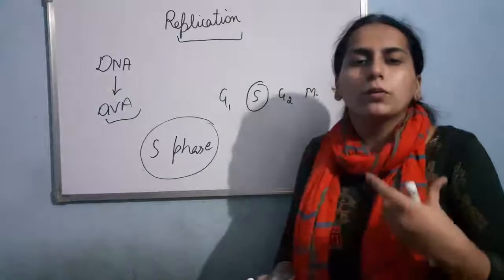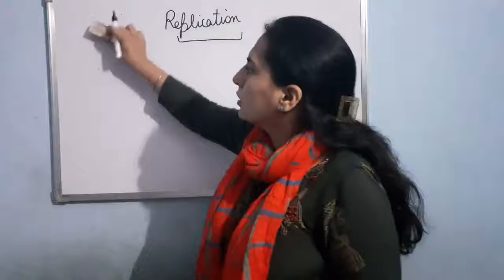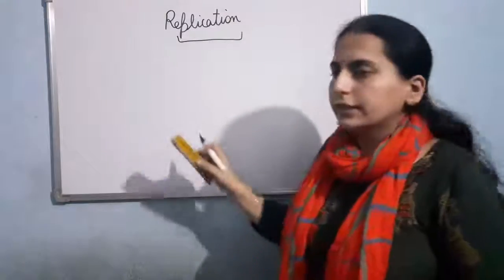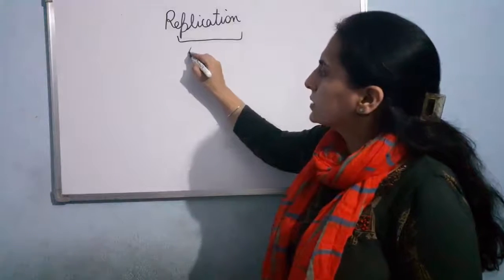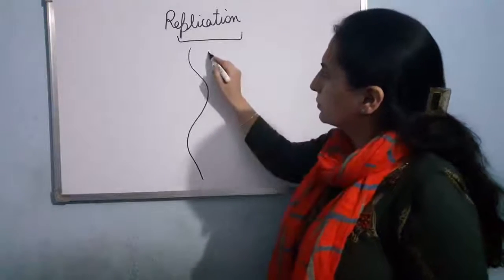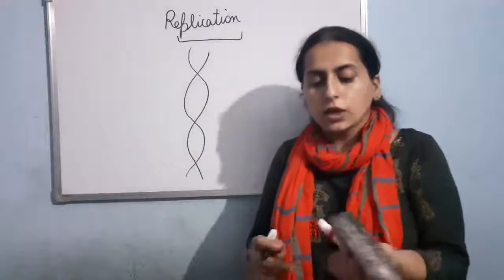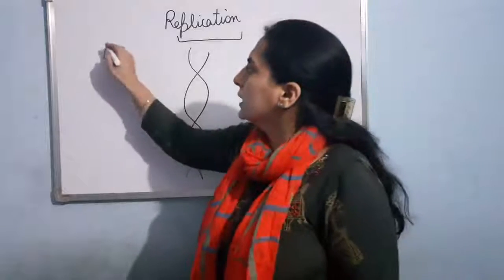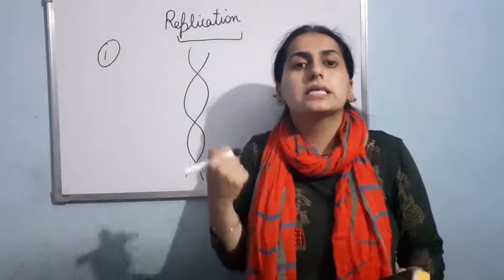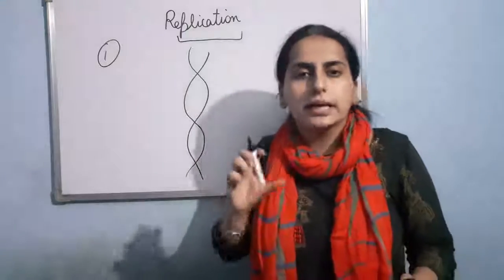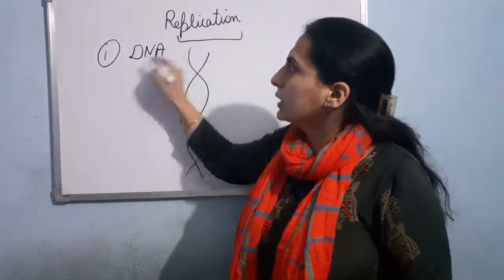Now let us talk about how the process of replication takes place. If I talk about the structure of DNA, you know that the DNA is a double helix. The DNA replication takes place with the help of various enzymes, and one of the most important enzymes of the process of replication is DNA polymerase.